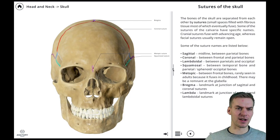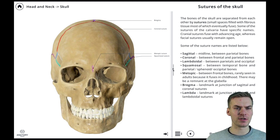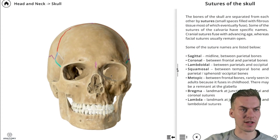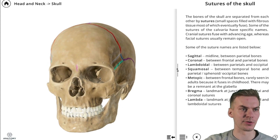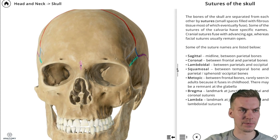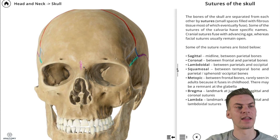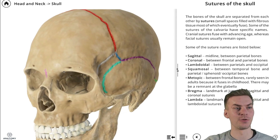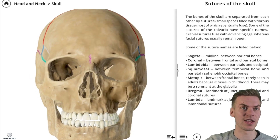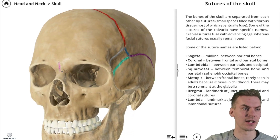The bones of the skull are separated from each other by sutures. Some of the sutures of the calvaria have specific names. Cranial sutures fuse with advancing age, whereas the facial sutures usually remain open. Looking at the glabella region, this line here is a remnant of the metopic suture — a suture rarely seen in adults as it fuses in childhood, but it can occasionally be seen as a remnant in adults.